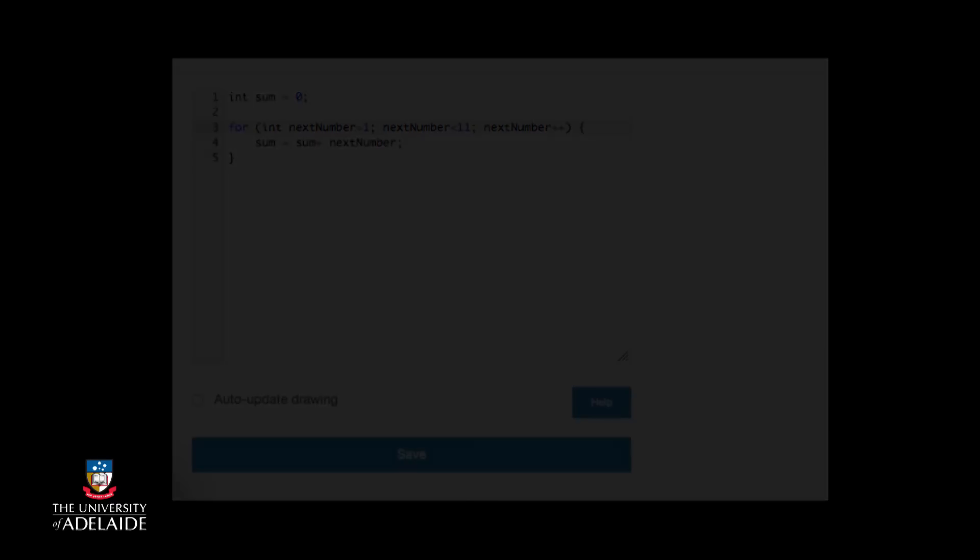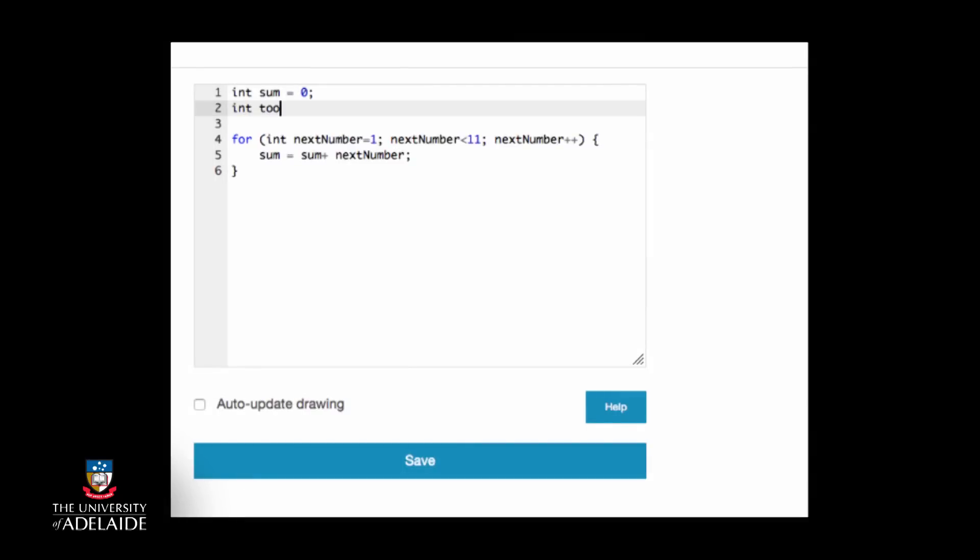Or we could also introduce a variable that holds this value. This would be useful in case we wanted to include multiple for-loops in our program with the same repetition conditions.